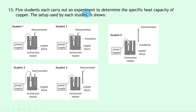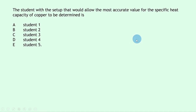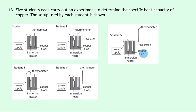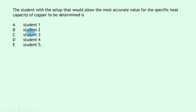Question 13: five students each determine the specific heat capacity of copper with different setups. Student 1 has a power supply and thermometer inside the block. Student 2 is the same but with insulation around it to reduce heat loss. Student 3 has the immersion heater half out of the block, Student 4 has the thermometer outside the block, and Student 5 has insulation but the thermometer outside. Student 2's setup is the best. The answer is B.